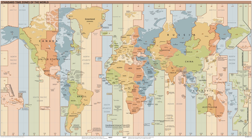UTC does not change with a change of seasons, but local time or civil time may change if a time zone jurisdiction observes daylight saving time. For example, local time on the east coast of the United States is five hours behind UTC during winter, but four hours behind while daylight saving is observed there.